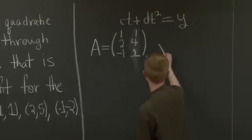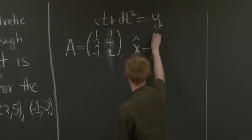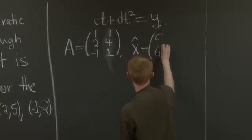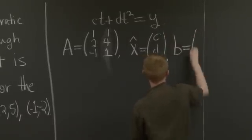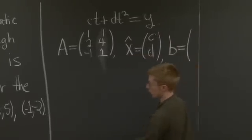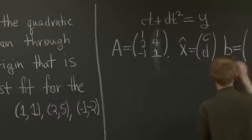And my x hat, that's just c and d. And my b, this is going to be the second coordinates: 1, 5, and -2.